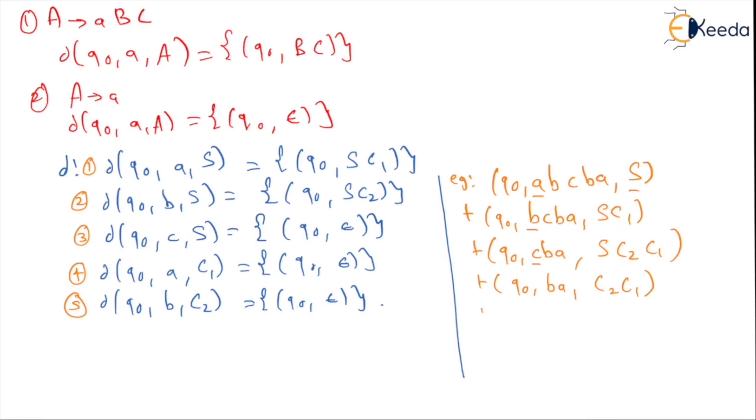Then q0 on b when the stack top is C2, using rule five I go to q0. I have a pending and C2 is popped, and therefore only C1 remains on the stack. And lastly, q0 on a when the stack top is C1, using rule four I go to q0. Epsilon remains over here and epsilon remains onto the stack since both of them contribute to epsilon. At the end I say this input will be accepted by my pushdown automata.